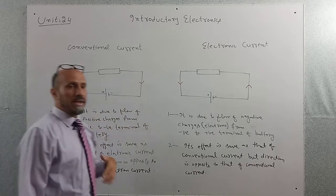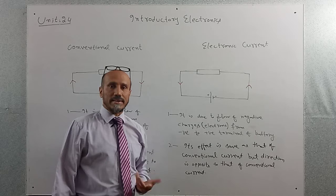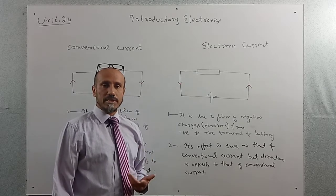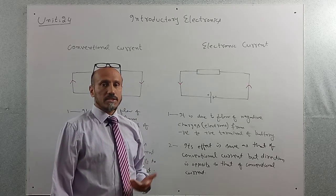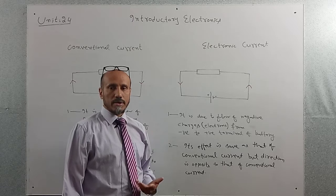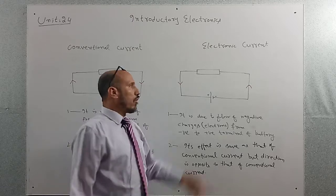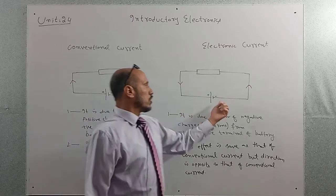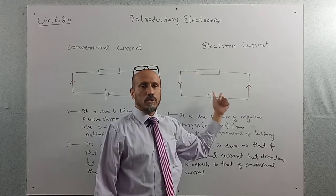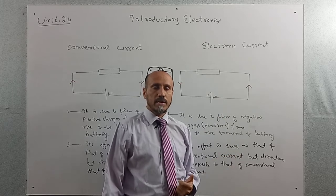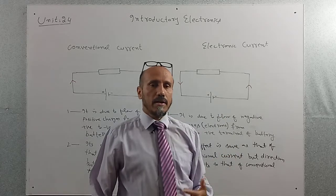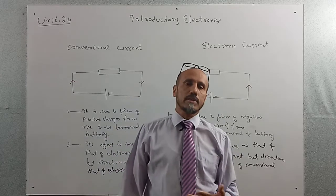But unless it is specifically stated to show the direction of electron current, we will always show its direction from the negative terminal of the battery to the positive terminal of the battery.